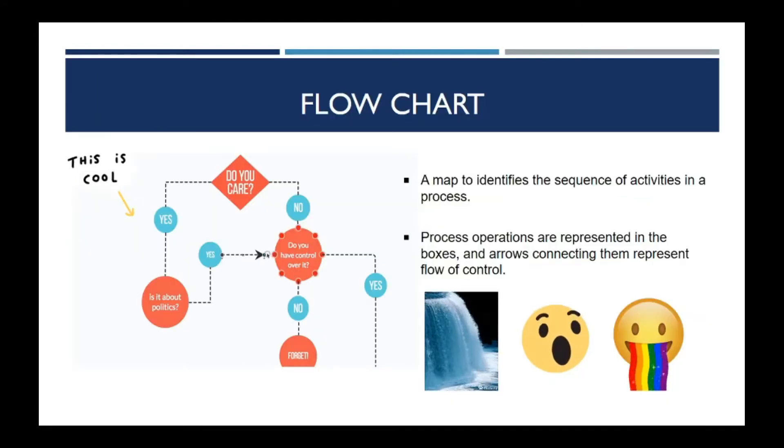The first QC tool that you need to know is the flowchart. A flowchart is a map to identify the sequence of activities in a process. The process operations are represented in the boxes, and arrows connecting them represent flow of control. There are a few shapes that represent the step or action for the flowchart. Can you find out on your own?